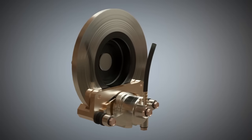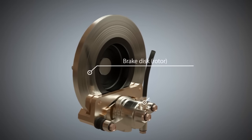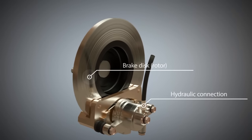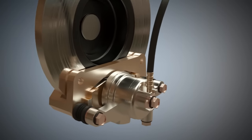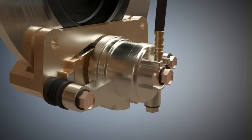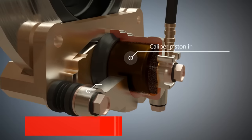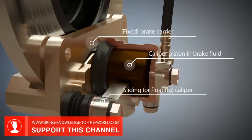A monoblock caliper with caliper pistons on both sides is the exception on the road. More often, floating calipers are used for normal cars. Floating calipers have one or more pistons on one side. Floating calipers are cheaper than fixed calipers.